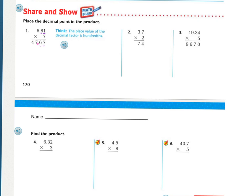So, for number one, there are two decimal places in the problem. So, you should have two decimal places in your answers. Number two, three and seven tenths times two. There is one decimal place in your problem. Therefore, you should have one decimal place in your answers. So, it should be seven and four tenths. And number three, nineteen and 34 hundredths times five. There are two decimal places in your problem. Therefore, you should have two decimal places in your answer. So, your answer should be ninety-six and seventy hundredths.